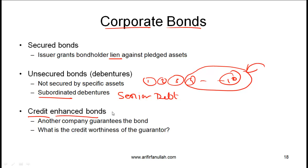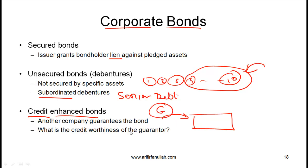Finally, you should understand credit enhanced bonds. A company issues a bond and then receives some sort of guarantee from another company — in the form of a letter of credit from a bank or insurance from an insurance company — in order to improve the bond's rating. From an investor perspective, you also need to assess the creditworthiness of the guarantor, because if the guarantor's credit is weak, the enhancement does not really help.